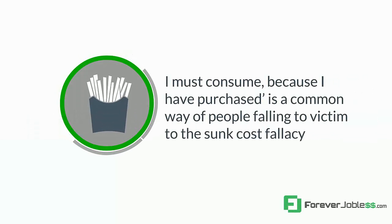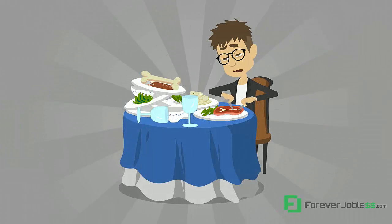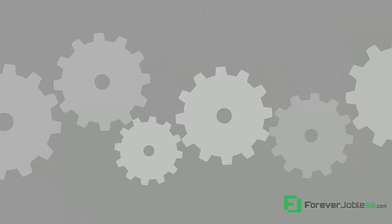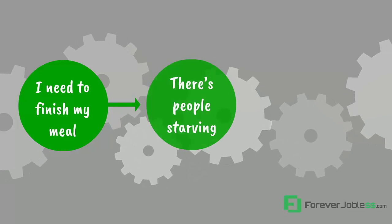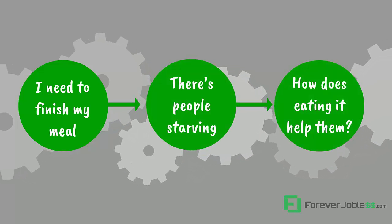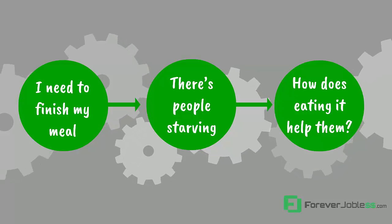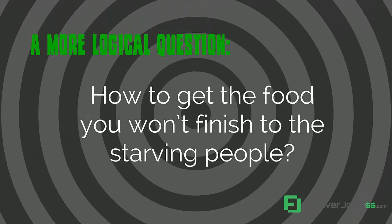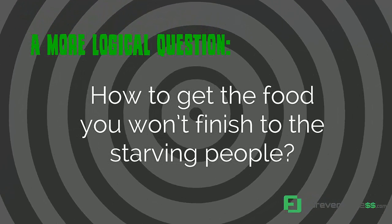Another one to think about is consumption. People say, 'I must consume it because I've purchased it.' It's a common way people fall victim to the sunk cost fallacy. Watch someone at a restaurant attempt to eat all of their food even though they're already full. Even people who are on a diet often allow this bias to control their actions — 'I need to finish my plate,' they say. They even attempt to justify it with illogical statements like, 'There are people starving,' as if that's related to their decision. A more logical question would be how to give the food you won't finish to the starving people, if that's a real concern. Otherwise, you're just making illogical statements while getting fat.